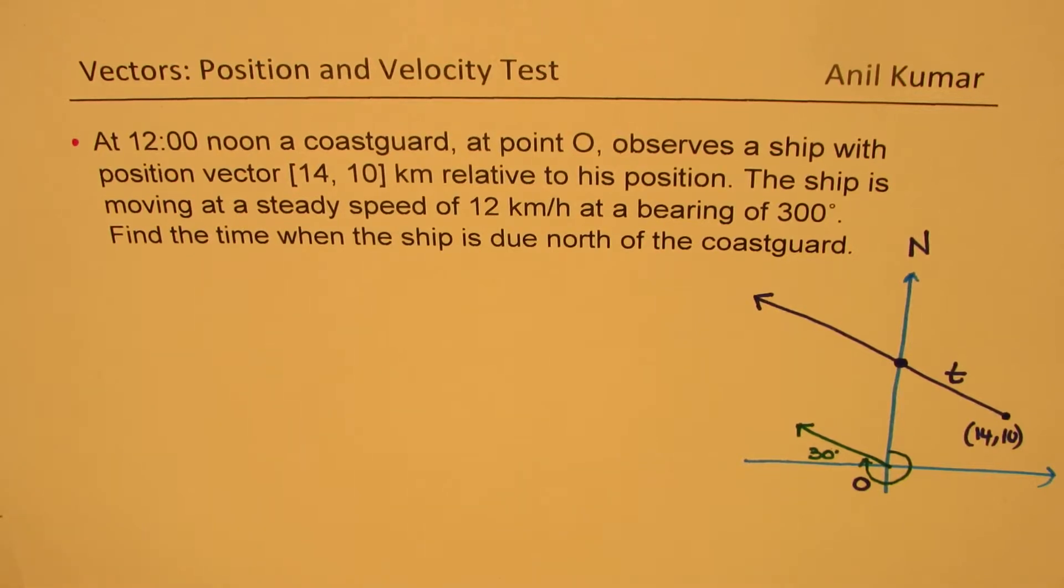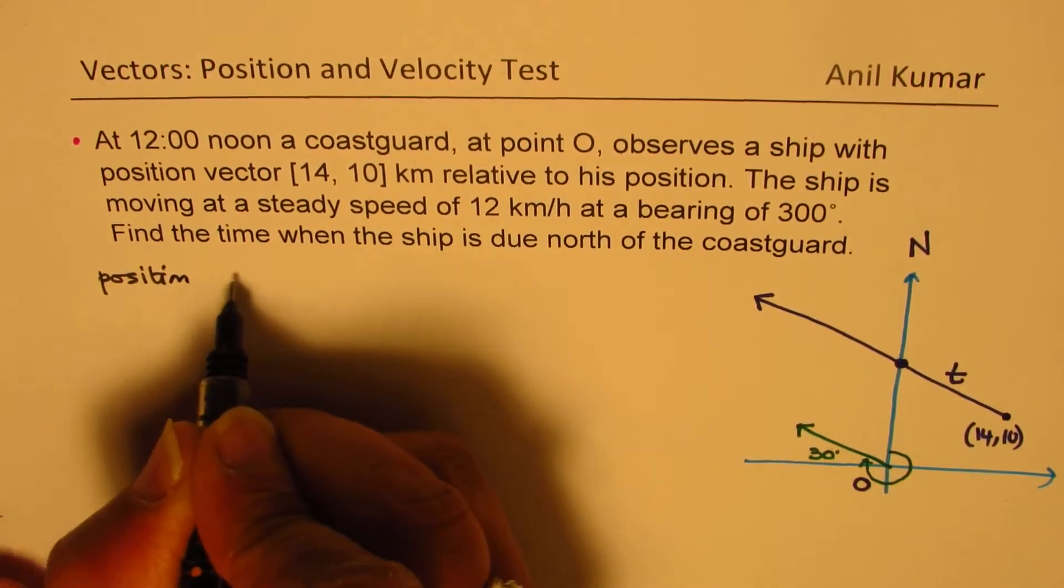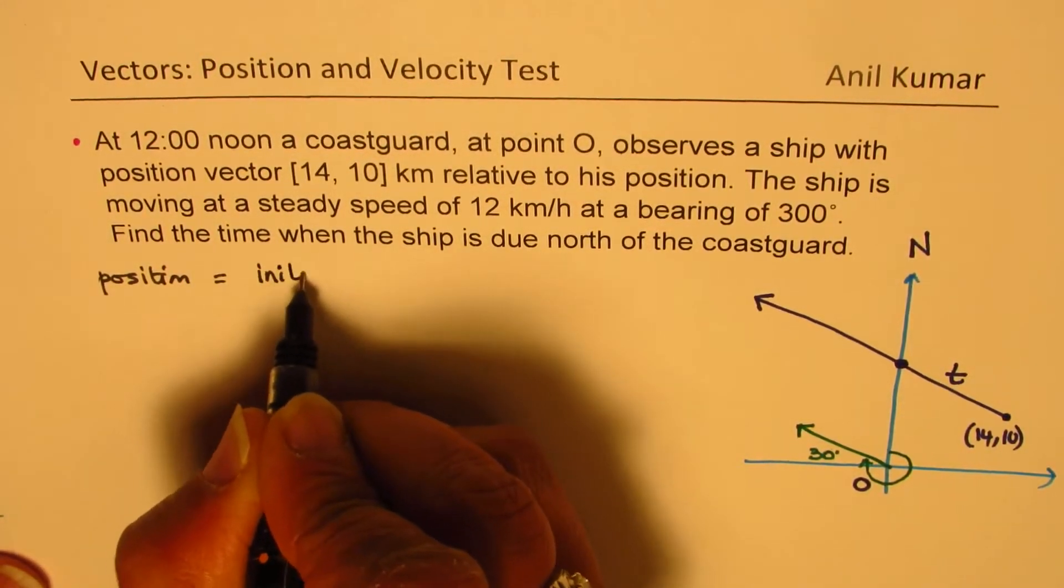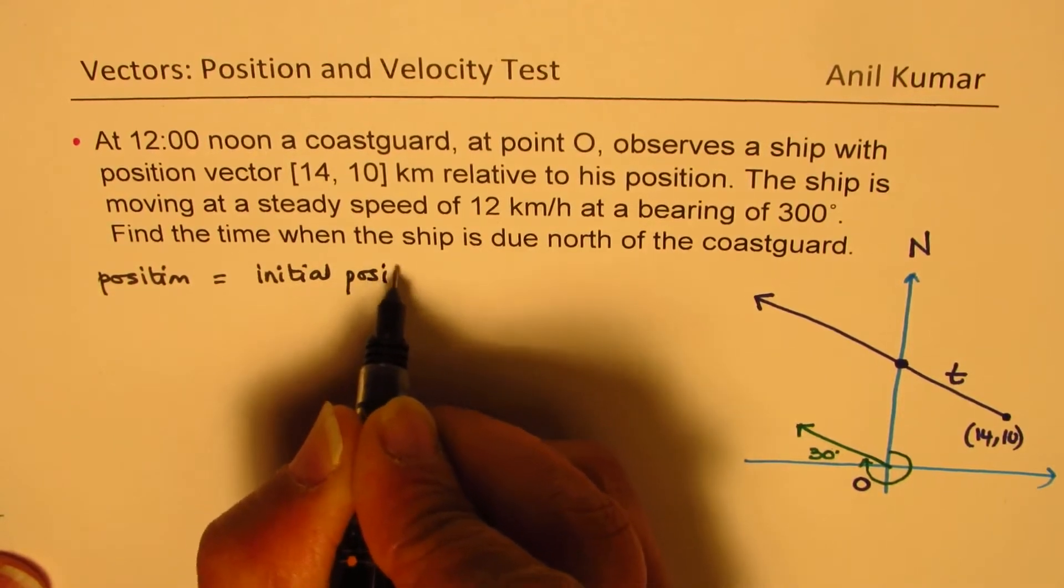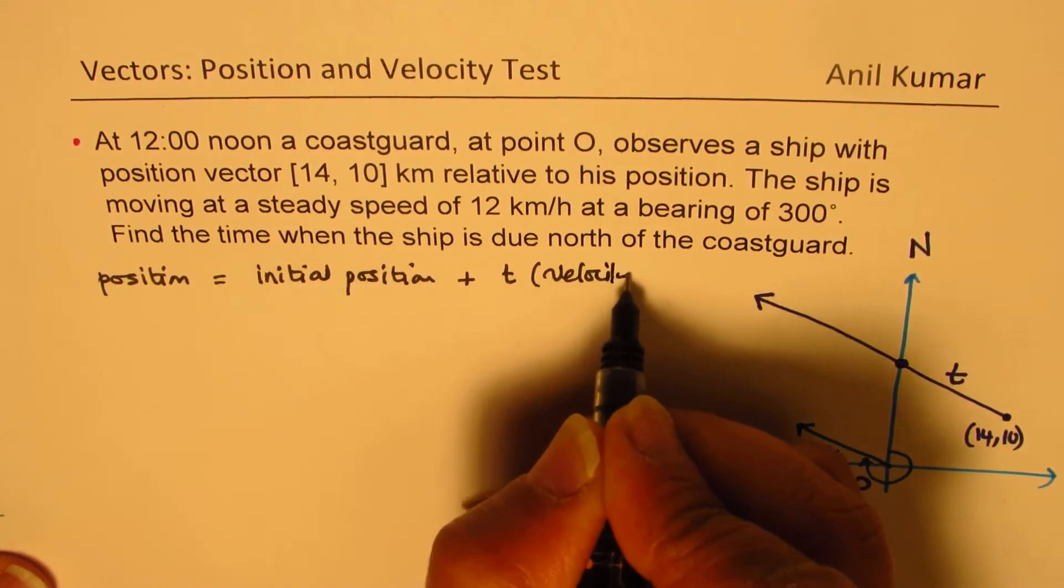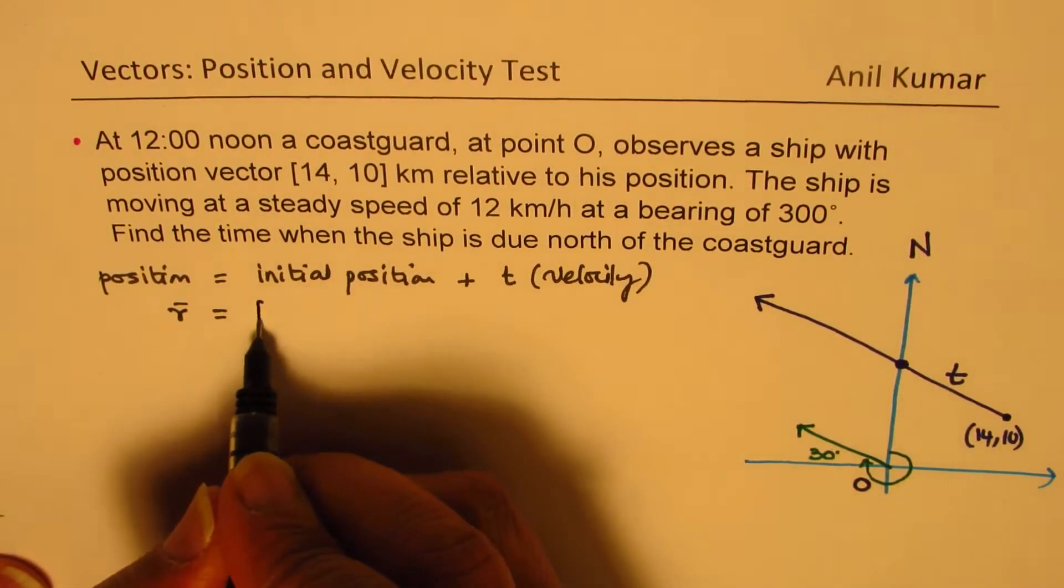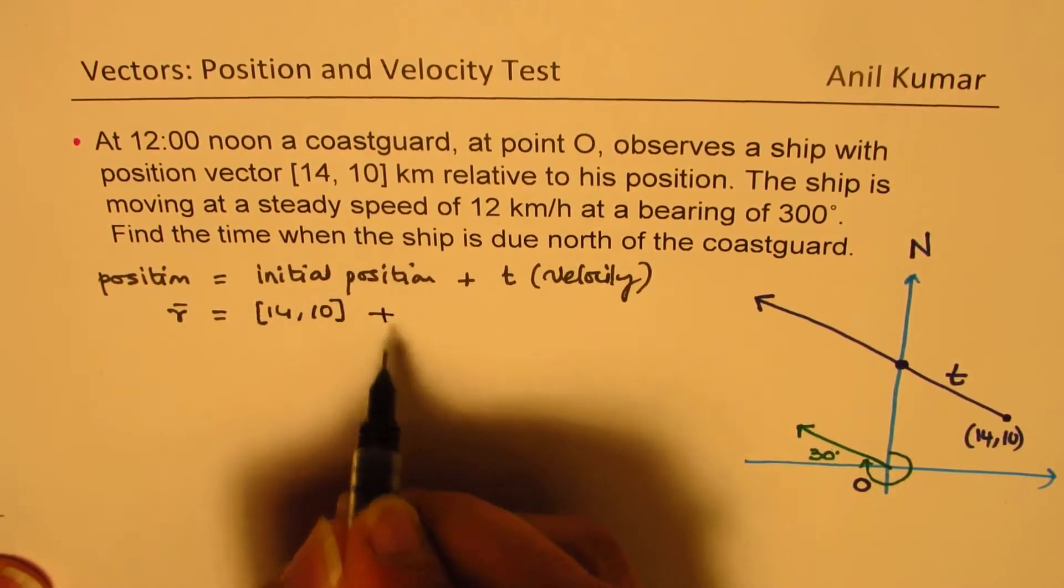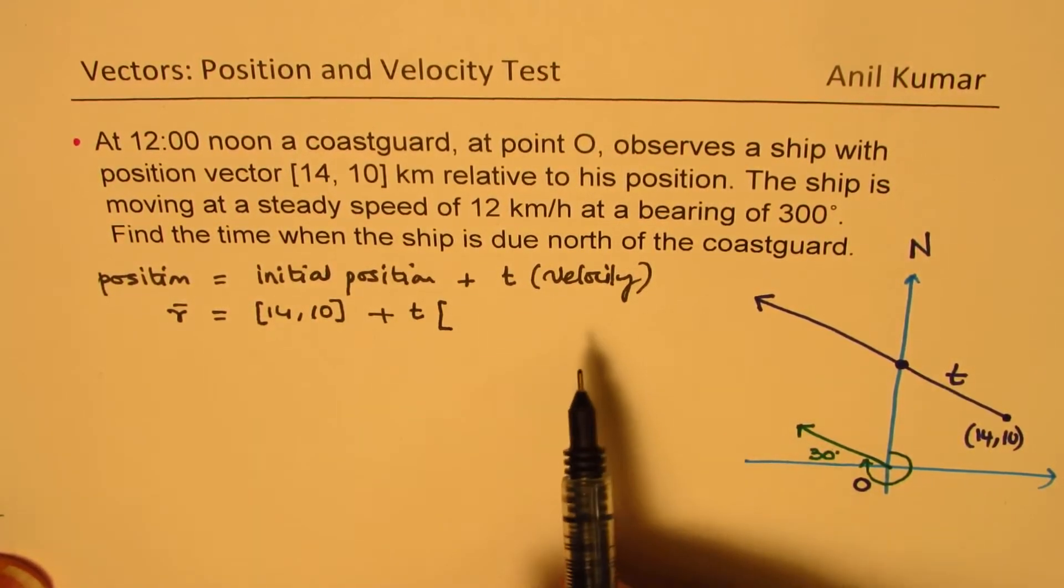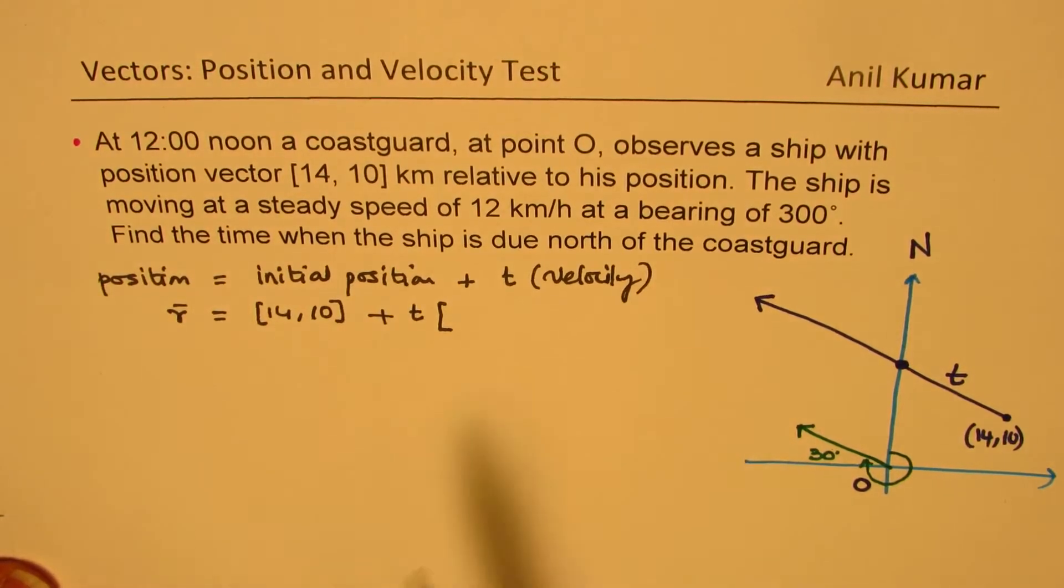Let's figure out the position vector. Position will be initial position plus time times velocity. So R equals the initial position [14, 10] plus T times the velocity, which is 12 kilometers per hour at a bearing of 300.